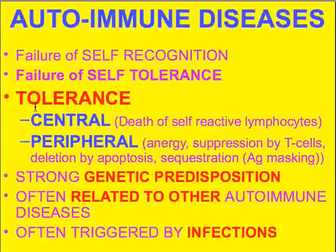Tolerance — the concept of tolerance — can be thought of as being central and peripheral. In central tolerance, the self-reactive lymphocytes that would theoretically attack the body's own tissue die. In peripheral tolerance, there's a variety of normal mechanisms: the abnormal cell that would normally attack is deleted by apoptosis, or sequestered by having its antigens masked from cells that would attack it. We also normally have concepts like anergy or suppression by T cells.